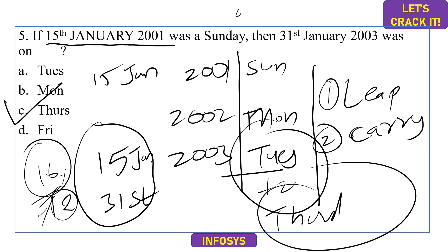Option C is the correct answer — Thursday. You can verify manually by counting from 15 Jan (Tuesday) to 31 Jan, and you will indeed get Thursday.